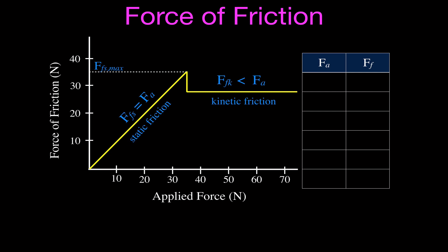This graph has two sections: the static friction section when the object is not moving, and the kinetic friction section when the object is actually moving. The graph shows the relationship between the applied force in newtons and the friction force in newtons. In the static section, the object is not moving — that's why it's called static friction — and the force of friction static is going to be equal to the applied force.